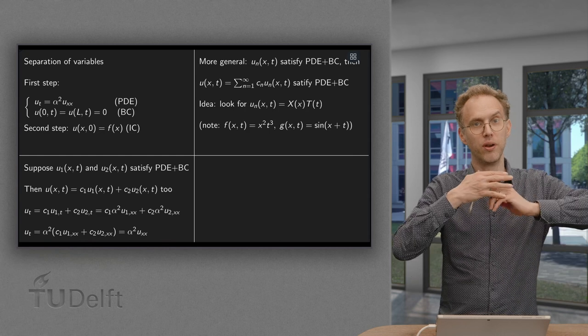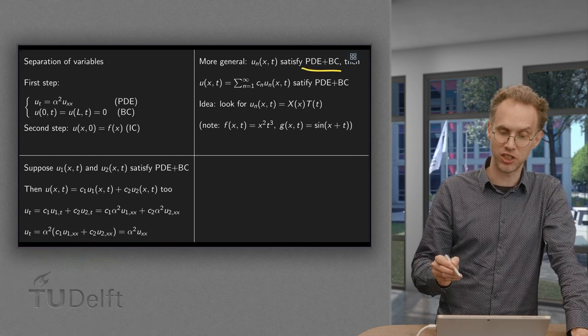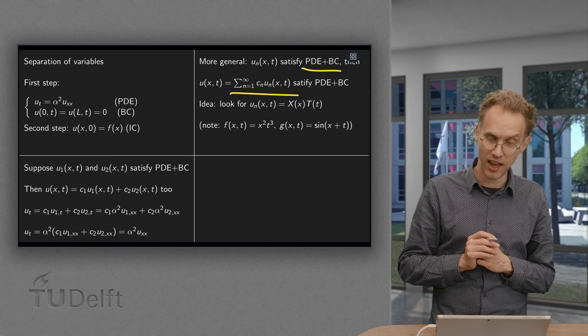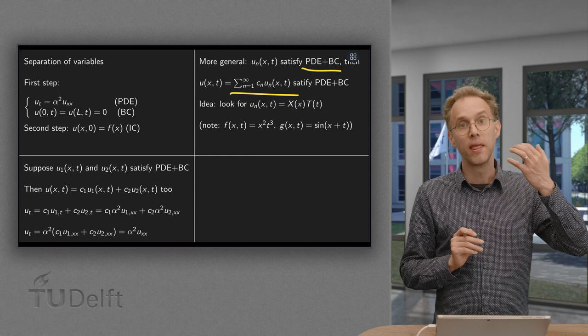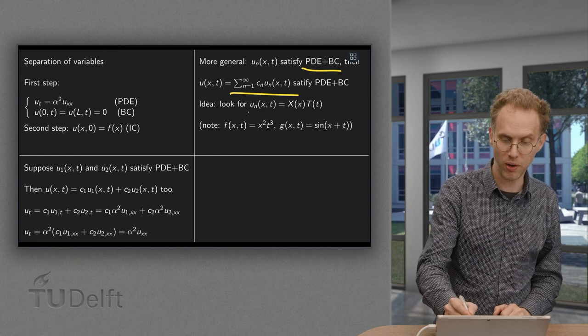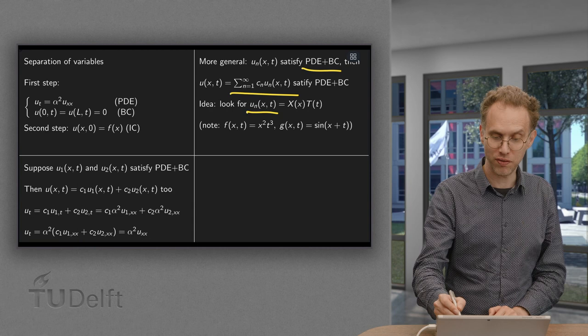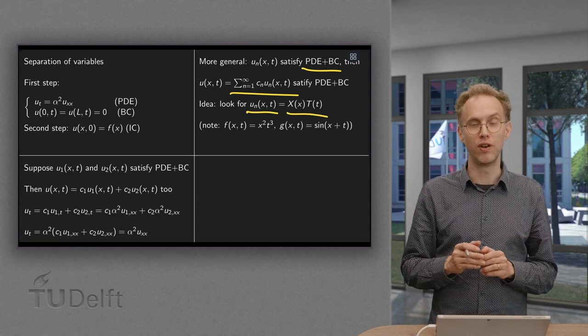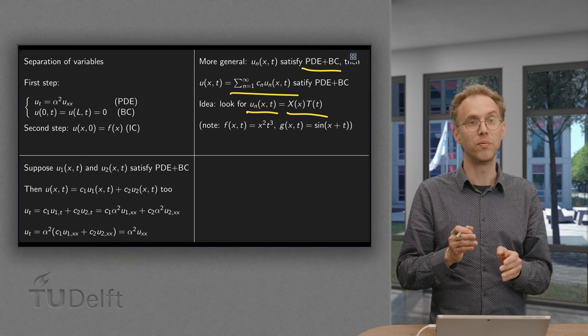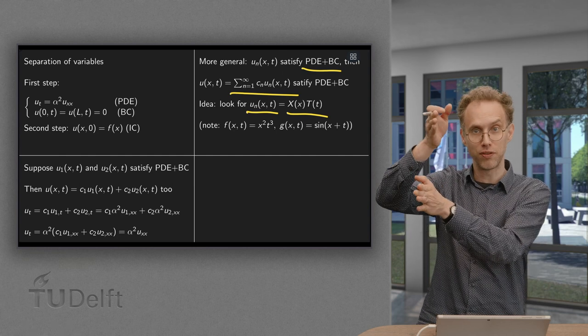So more generally, if you have a number UN of X of C satisfying both the PDE and the boundary condition, then any linear combination of them also satisfies the PDE and the boundary condition. Now we are going to look for a very special form of solutions UN. We are looking for UN of the form X of X times T of T. So we are looking for functions of X and T not just any ones, but functions which are a product of a function of only X times a function of only T.